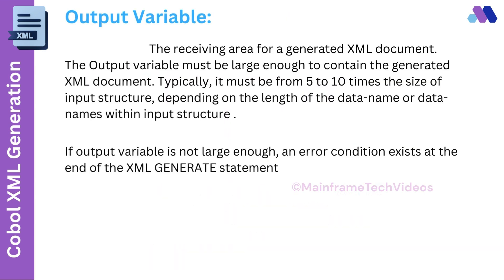Output variable is the receiving area for a generated XML document. The output variable must be large enough to contain the generated XML document — typically 5 to 10 times the size of the input structure, depending on the length of the data names within it. If the output variable is not large enough, an error condition exists at the end of the XML Generate statement.